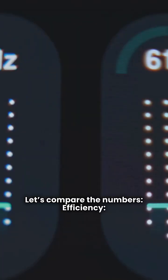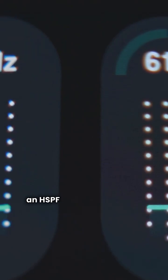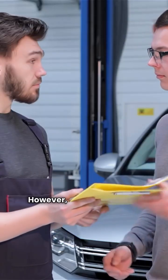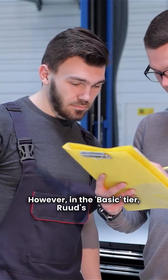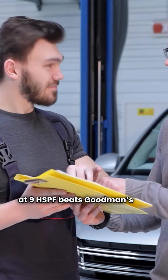Let's compare the numbers. Efficiency. Ruud takes the lead in the ultimate category with an HSPF of 11.5 compared to Goodman's 10. However, in the basic tier, Ruud's WP-14 at 9 HSPF beats Goodman's 7.8.